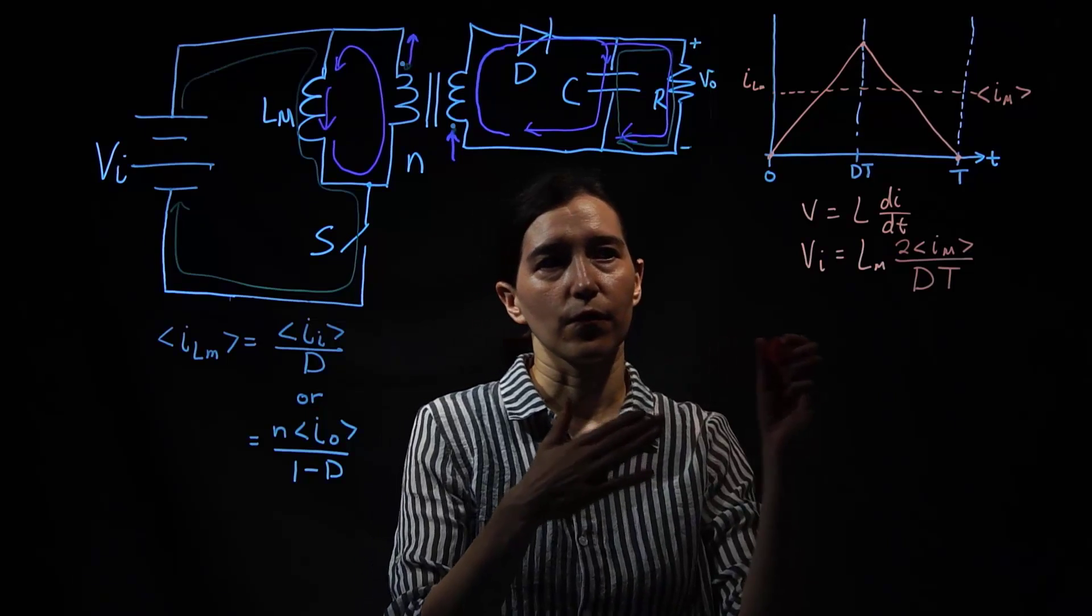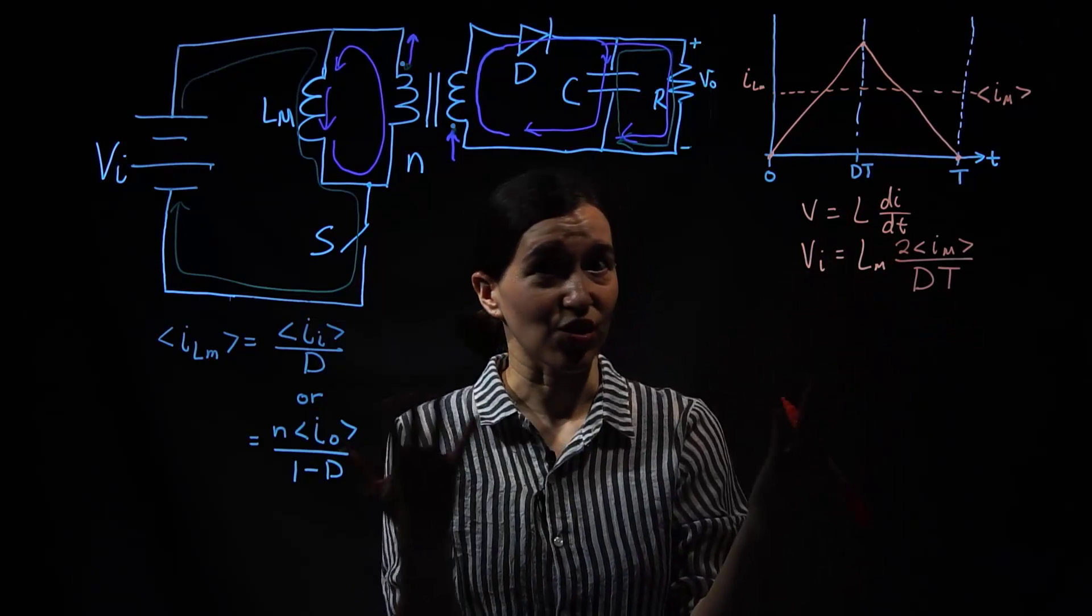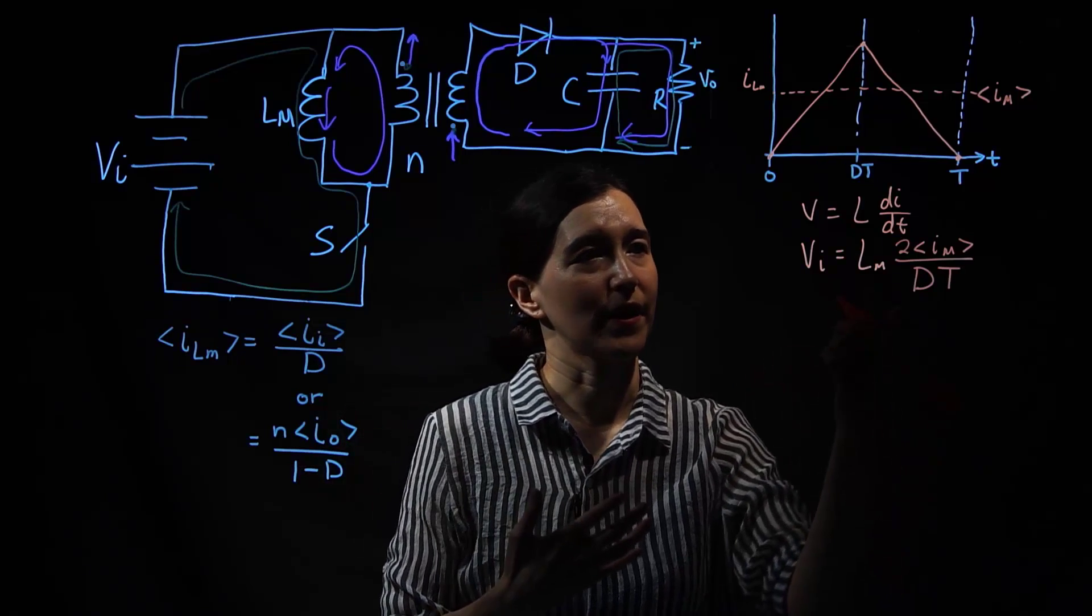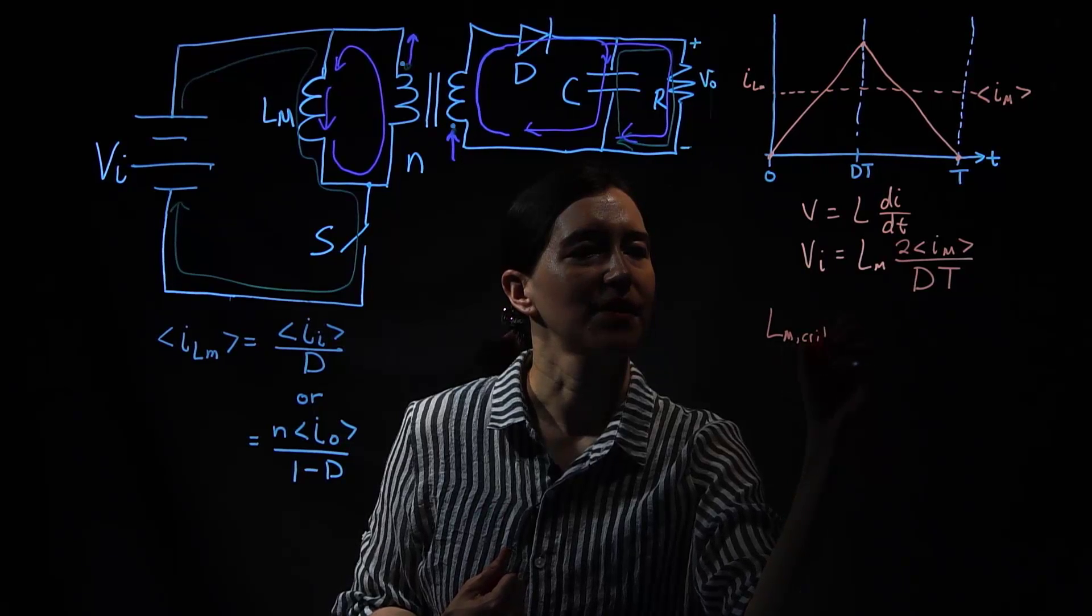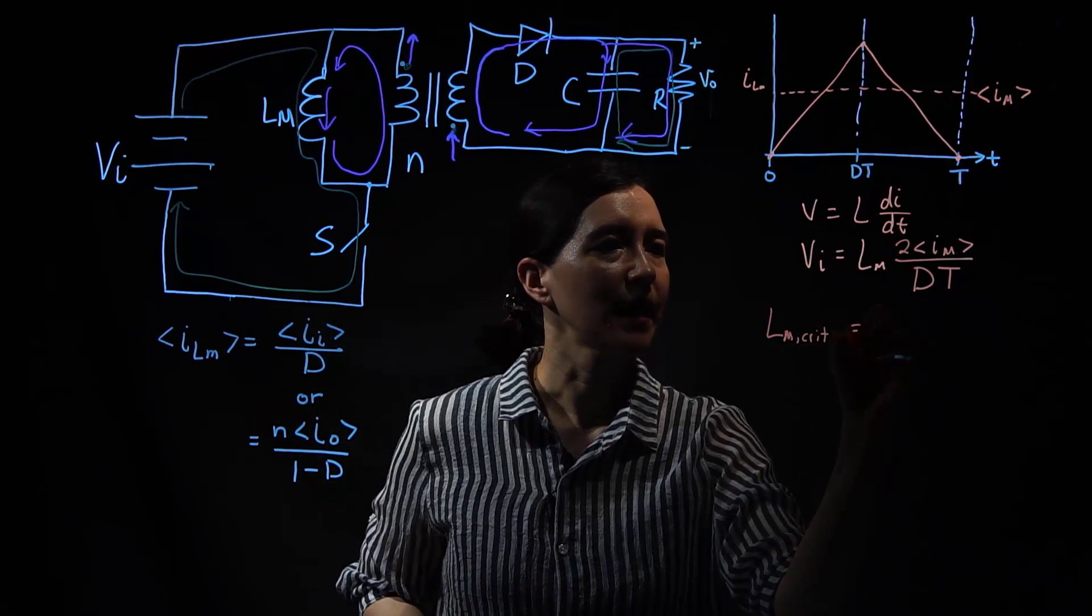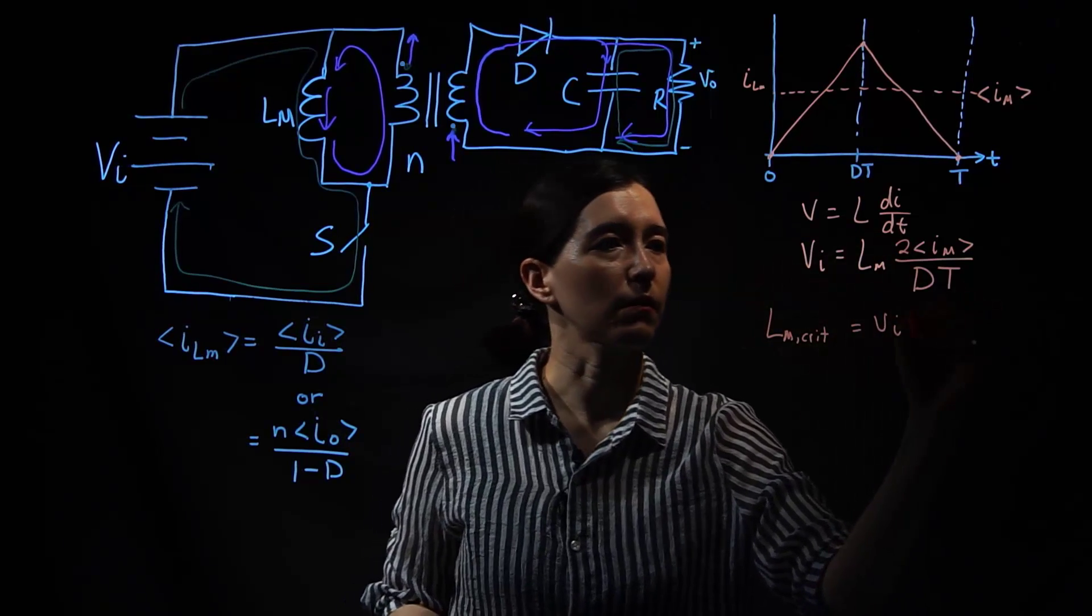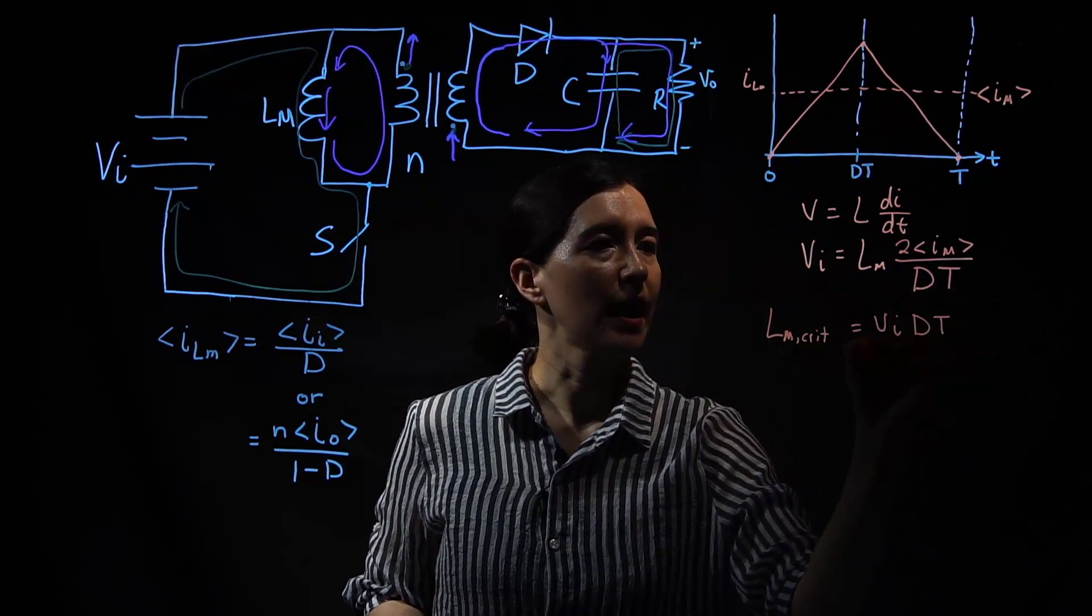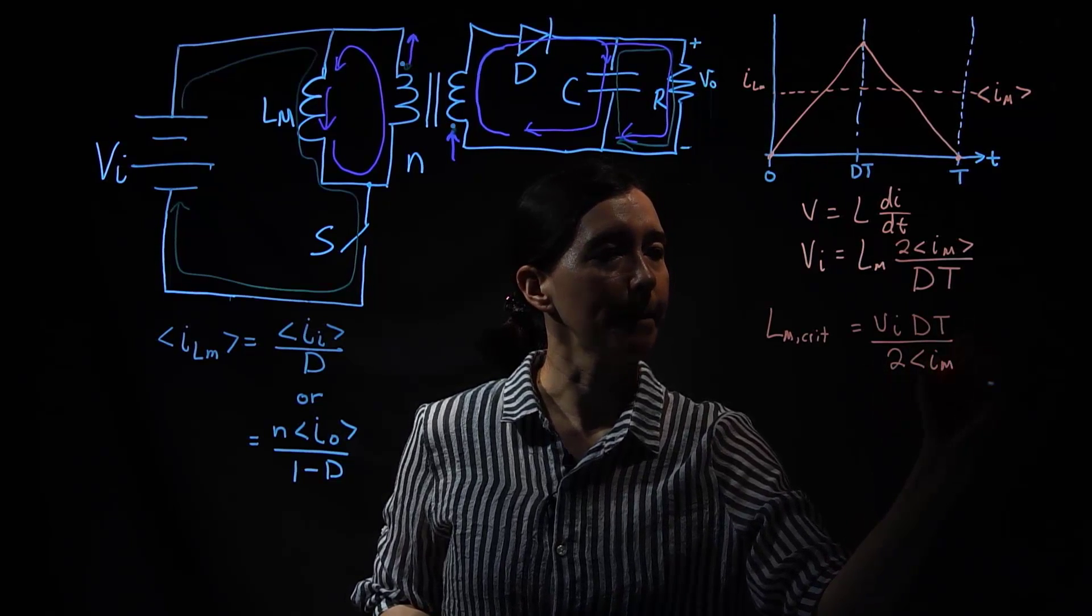All right, so first let's, we're going to solve for this Lm. Actually I'm going to change that to critical because that's the value we're trying to find. So let's just write that Lm crit, just to be really clear. And we have Vi, so it's the input voltage.